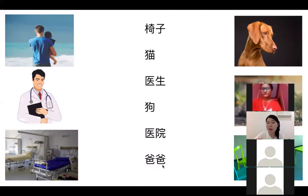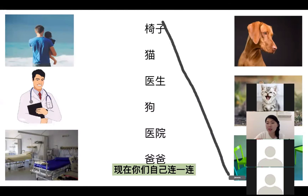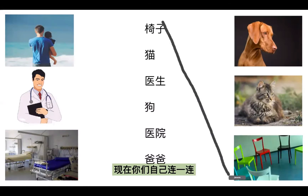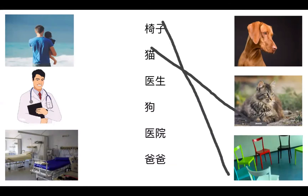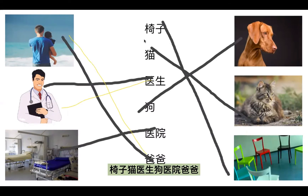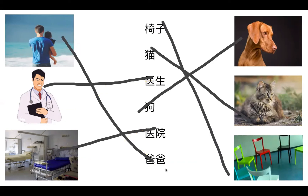这里有椅子、猫、医生、狗、医院和爸爸。现在你们自己连一连。椅子、猫、医生、狗、医院、爸爸。